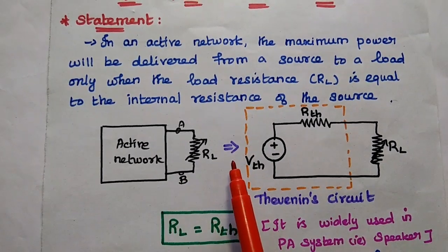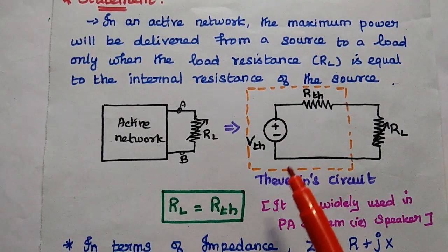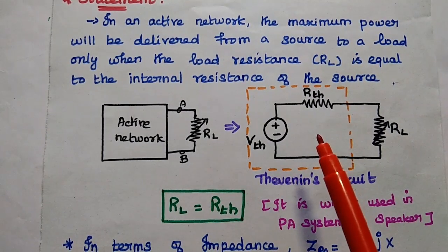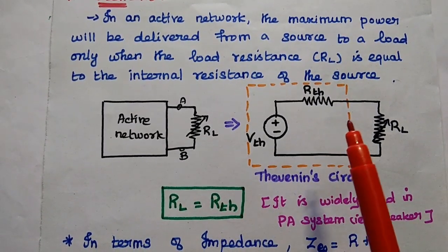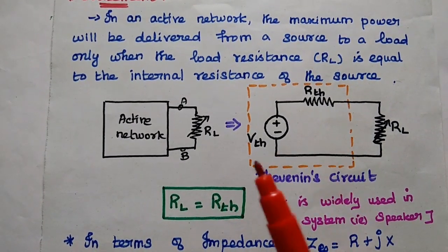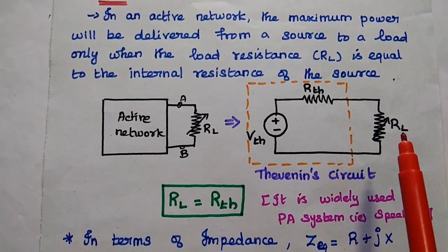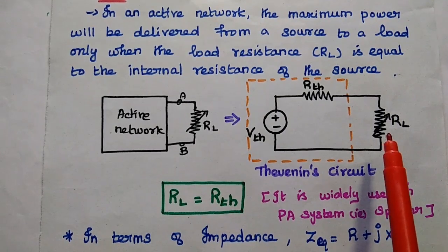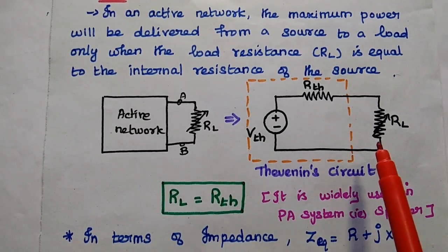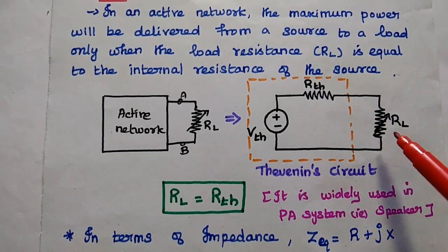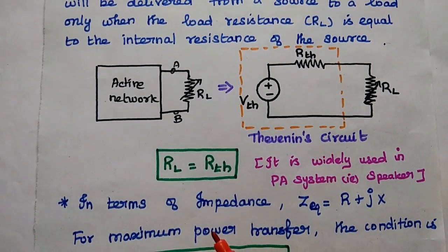We can use the Thevenin's equivalent circuit to get the VTH and RTH values. VTH is a constant and RTH is also a constant. So the power depends only on the load resistance value — it is the variable. We have to ensure that for maximum power transfer, the load resistor is equal to the Thevenin's equivalent resistor.